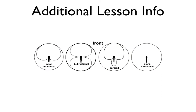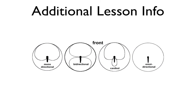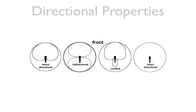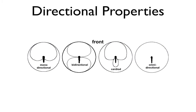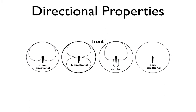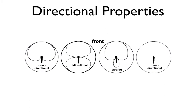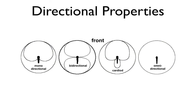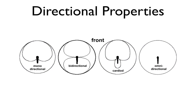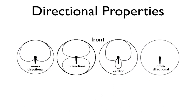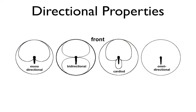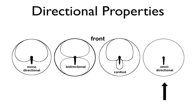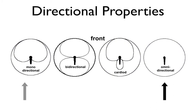Understanding different pattern types will help you choose the right mic for the job, so let's go over directional properties. Every microphone has a property known as directionality — this describes the microphone's sensitivity to sound from various directions. Some microphones pick up sound equally from all directions, while others only pick up sound from one direction or a particular combination of directions.